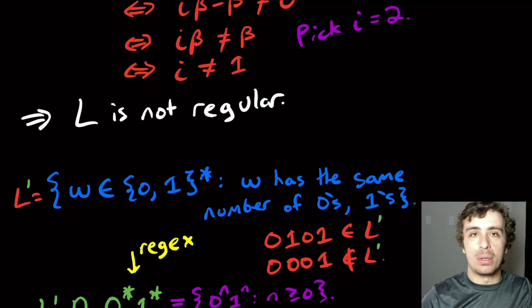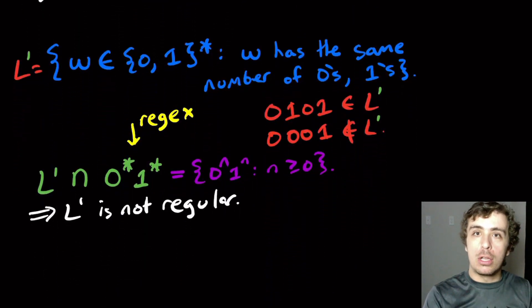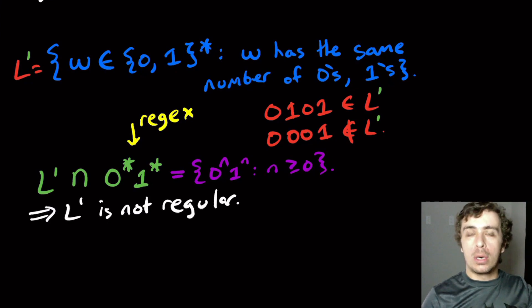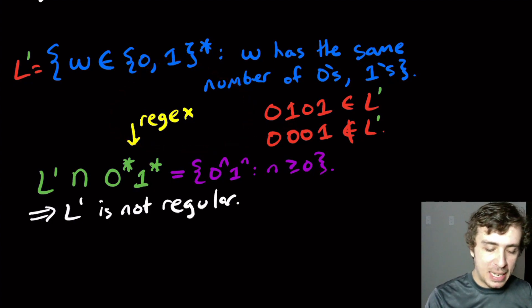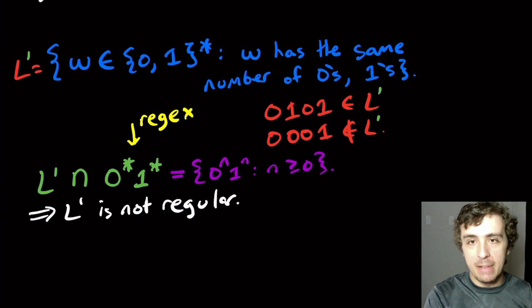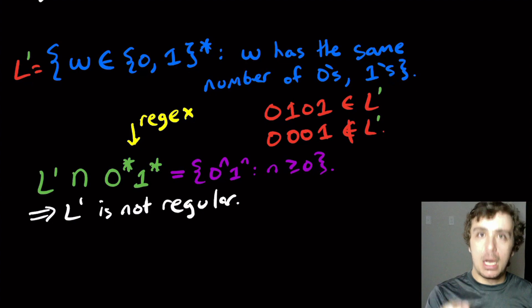So what my advice is, try to use either closure properties or use the proof or adapt the proof of some other language to use for this language. And it turns out to be very, very powerful. For example, another closure property technique, which isn't very effective here, but we may see it later, is to use, say, like complement.